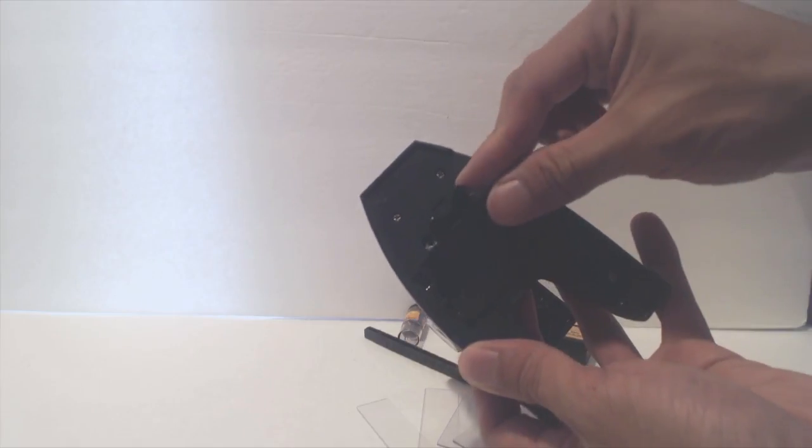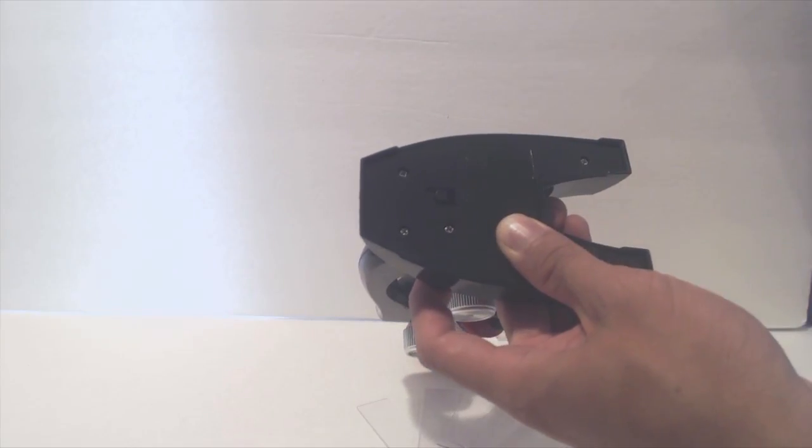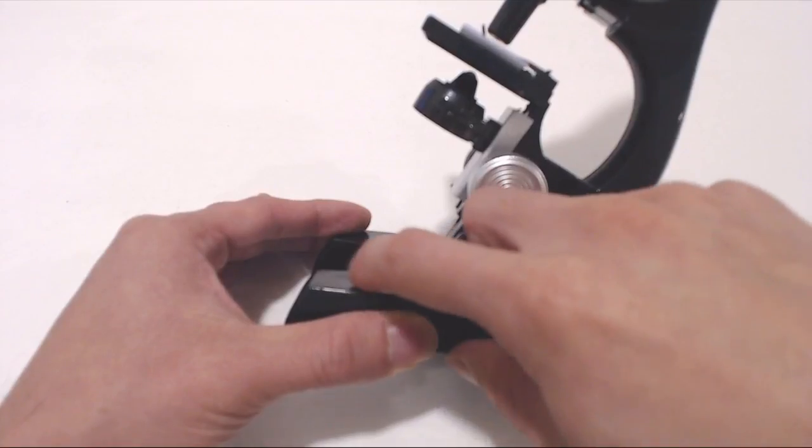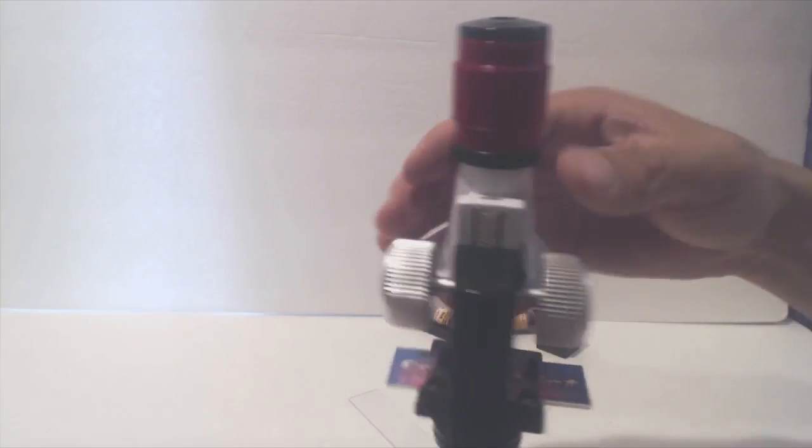The battery bay door has a mini screw that keeps it on, but it's not really required if you find it to be a nuisance. Turn on the light by using this little red switch on the base. Let's take a look at the demo slide and see what it looks like.